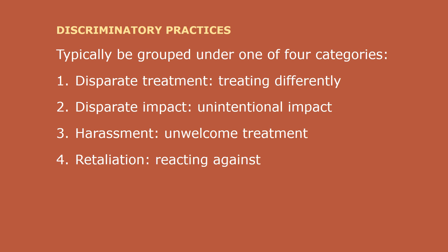Discriminatory practices can typically be grouped in one of four categories. First, disparate treatment, where an individual is treated differently because of the characteristic that defines their protected class. Second, disparate impact, a more subtle and usually unintentional form of discrimination, also known as adverse impact. Third, harassment, which is unwanted and unwelcome treatment because of a protected class. And finally, retaliation — the law prohibits employers from retaliating against an employee for making a complaint of harassment or discrimination.